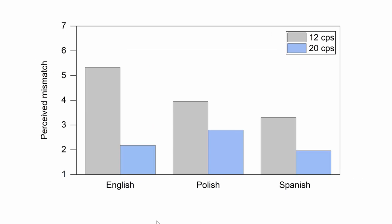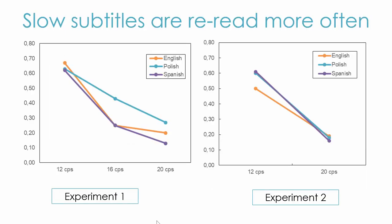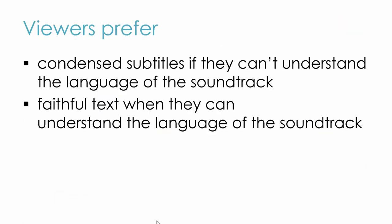In the second experiment, where the clips were in English, we asked participants if they noticed any mismatches between the dialogue and the subtitles. The highest number of mismatches were declared in the slowest subtitles at 12 characters per second by English people. Finally, using eye-tracking, we found that slow subtitles were re-read most often compared to the fast ones, which was visible in the higher number of revisits to the subtitle area. Viewers stated they preferred condensed text in subtitles when they didn't understand the language of the film's soundtrack, but they wanted more verbatim and less condensed text in English clips where they could understand what the characters were saying.